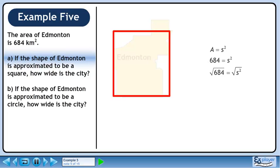Take the square root of each side to isolate the side length. Solving for s, we get a side length of approximately 26.2 kilometers.